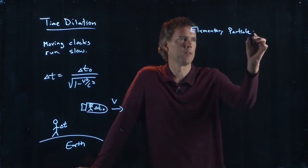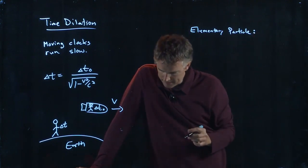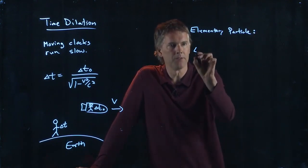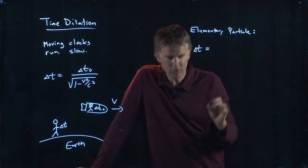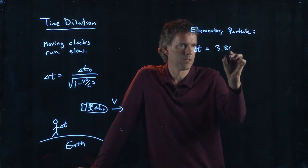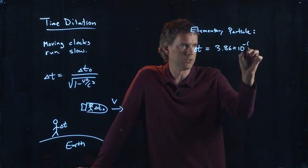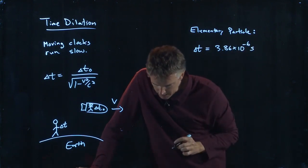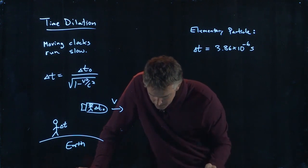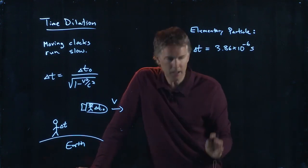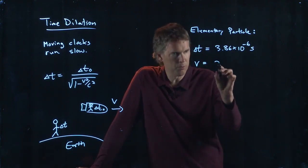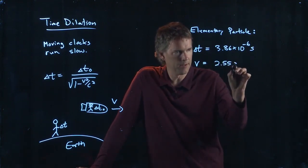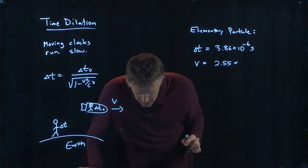The lifetime of this thing, Delta T, is 3.86 microseconds, which is 10 to the minus 6 seconds. But the speed is pretty fast. I have 2.55 times 10 to the 8 meters per second, so it's a good fraction of the speed of light.